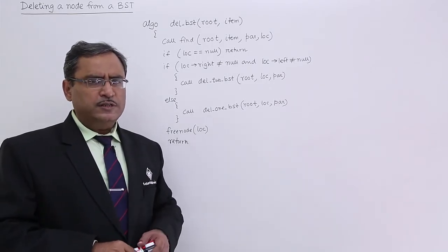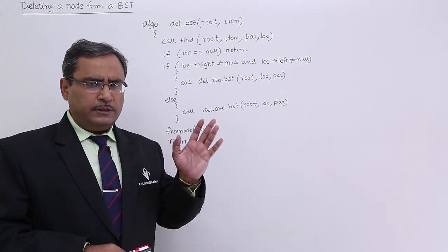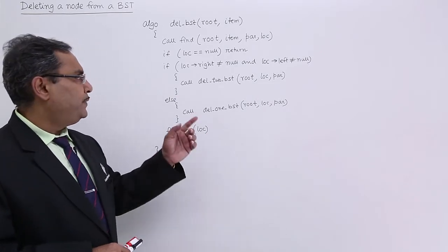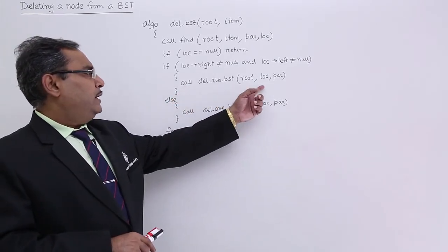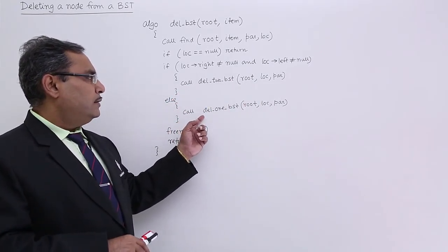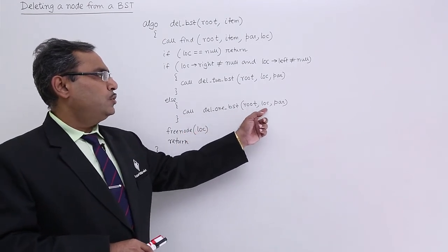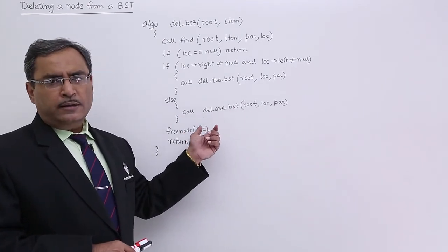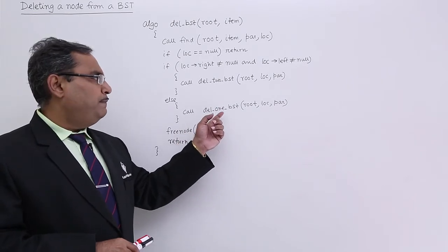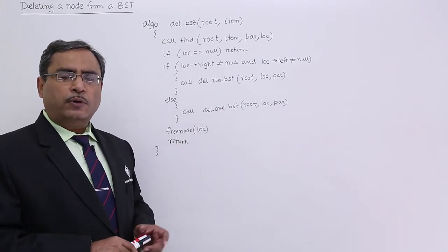Everything I discussed in the previous video please watch all of them because these are in continuation. Now in this way I have done else call del 1 BST root lock part. I am calling that del 1 BST. Del 1 BST is for what?